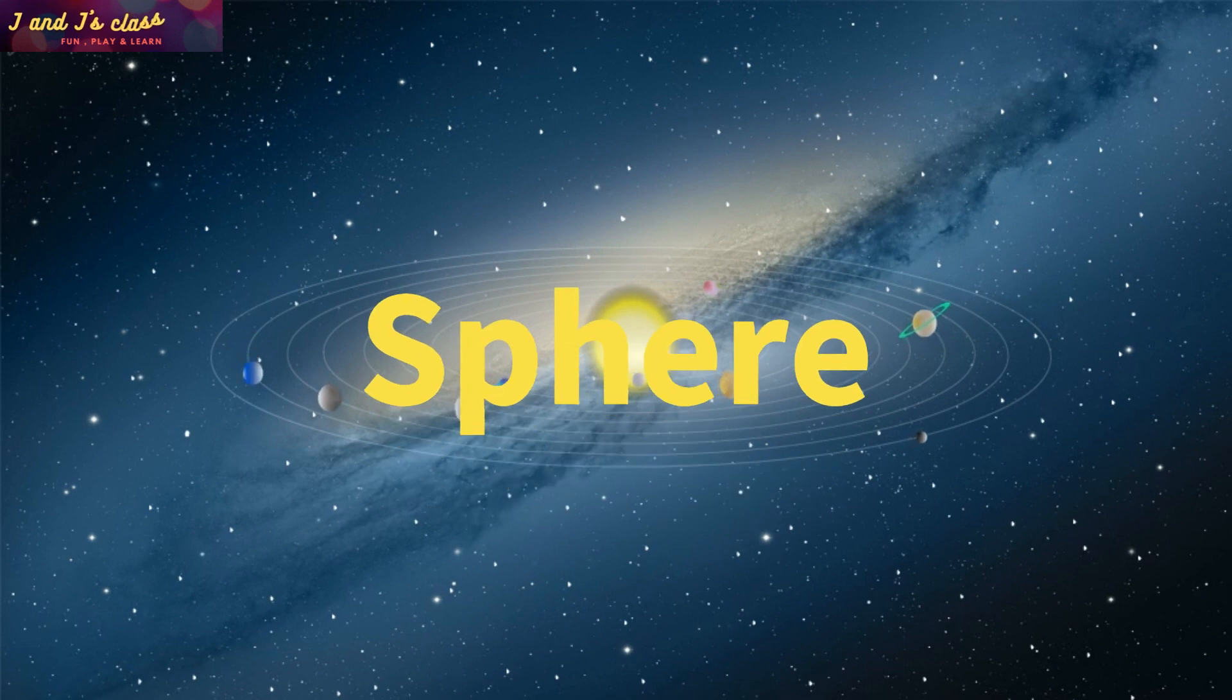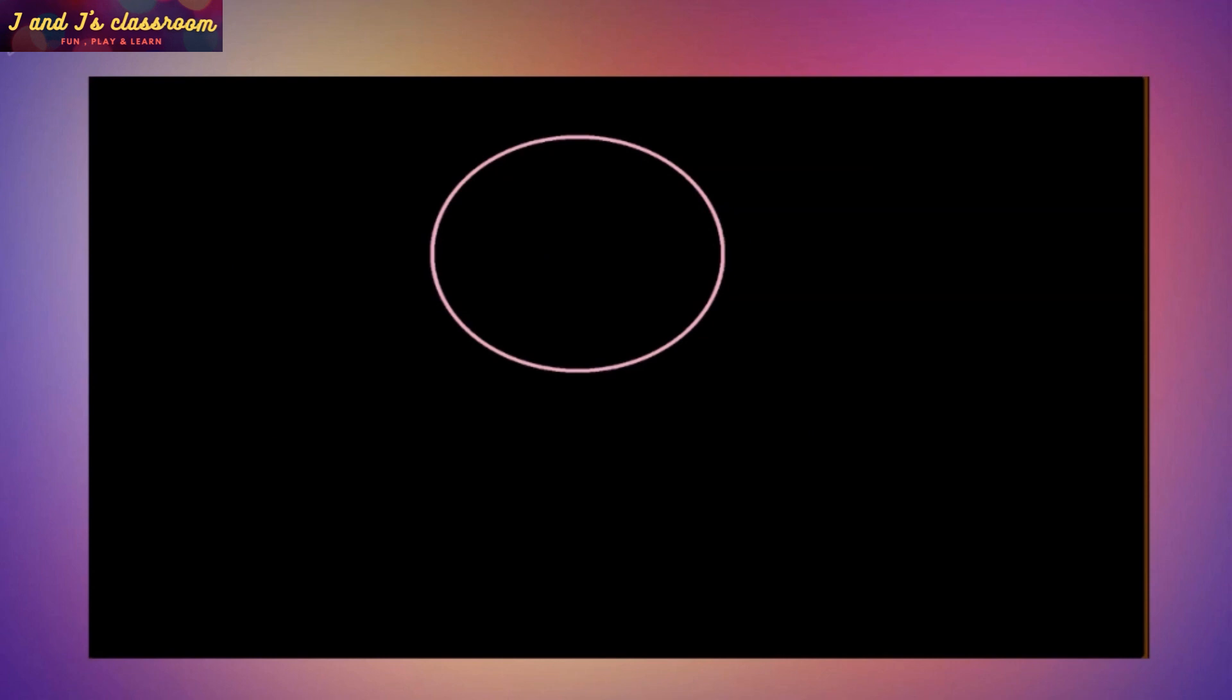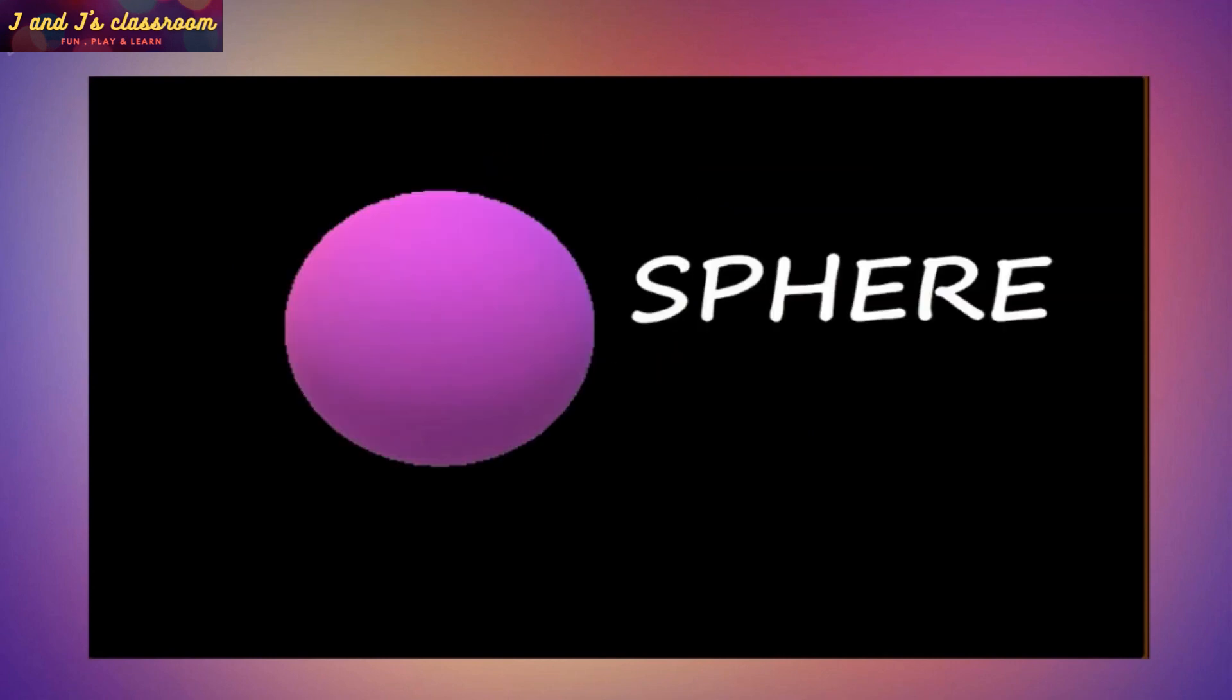Sphere. S-P-H-E-R-E Sphere. The 3D form of circle is called the sphere. So draw a big circle and shade with two colors to make it 3D.